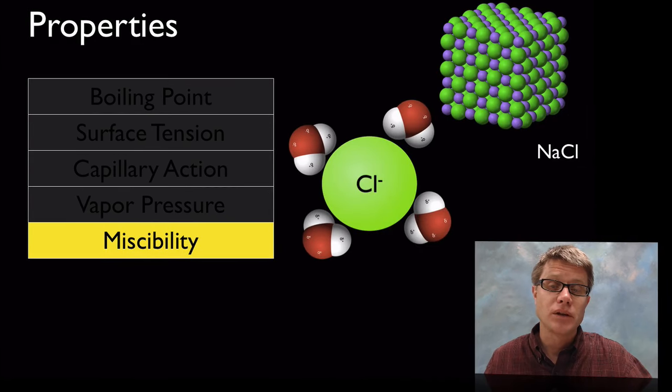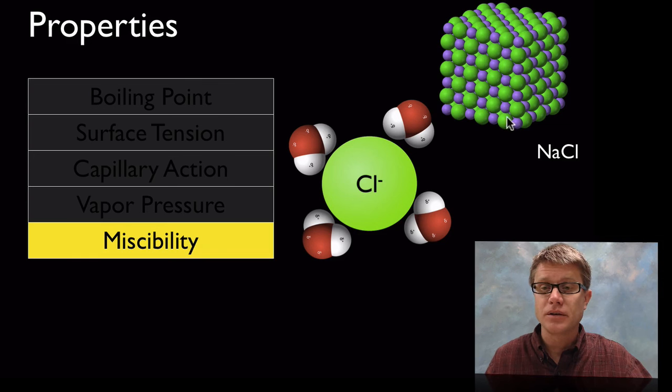This also explains why water is really good at breaking down ionic compounds. This is salt, and salt has really high bonds in an ionic compound. But if you add water to it it readily breaks apart. The reason why is those chloride ions or the chlorine ions have a negative charge.